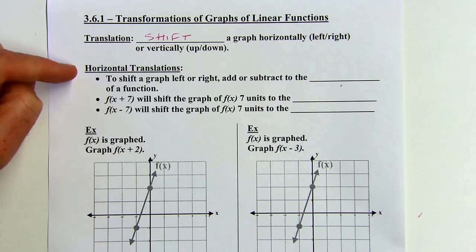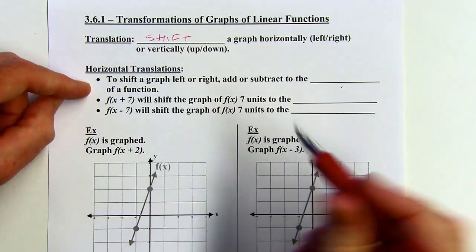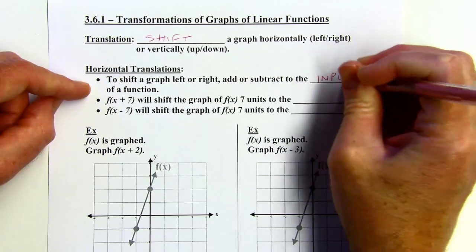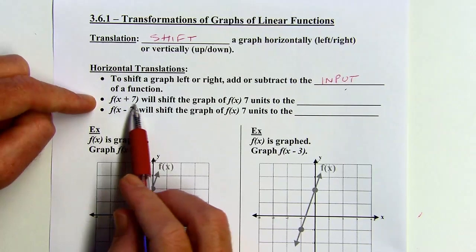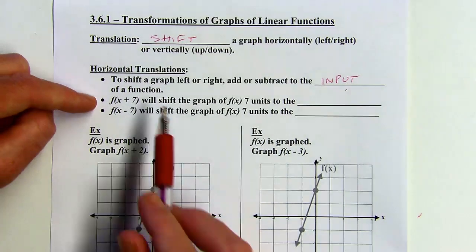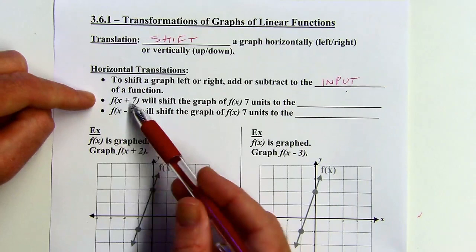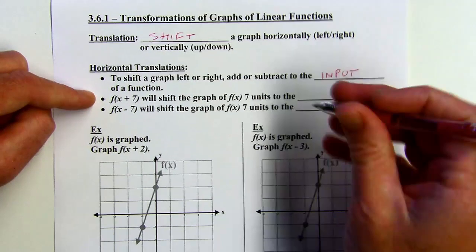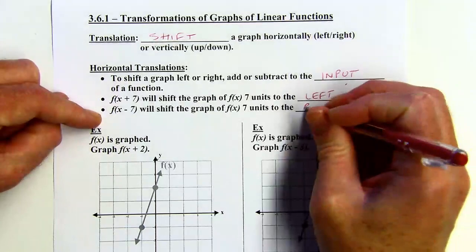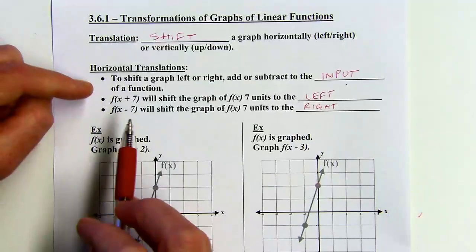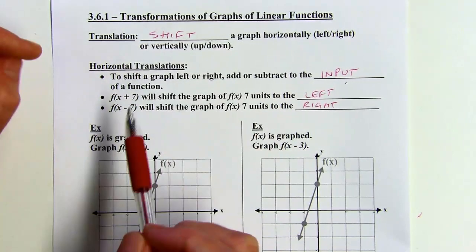For a horizontal translation — meaning we're shifting a graph left or right — we're going to add or subtract to the input of a function. The input is what goes inside the parentheses in function notation. So x plus 7 or x minus 7 will move things left or right. When we go x plus 7, it actually shifts the graph to the left; x minus 7 shifts it to the right. That might be counterintuitive — you might think adding goes right, subtracting goes left, but that's not the case.